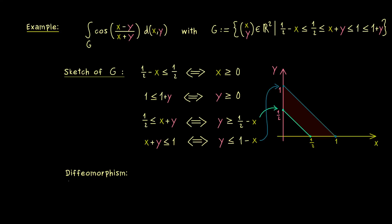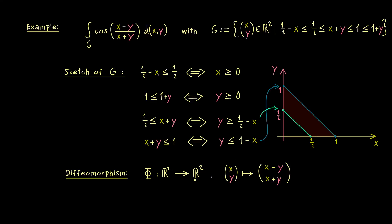The next step is to define our C1 diffeomorphism phi, which maps from R2 to R2. Given input (x, y), the output should match the composition in the integral. So we set the first component to (x minus y) and the second to (x plus y). This map is clearly invertible, differentiable, and its inverse is also differentiable — it's simple enough to pose no problems.